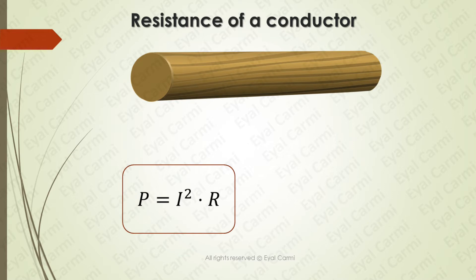First, let's talk about what affects conductor power loss. The power loss P equals I squared R, where I is the current and R is the conductor resistance. As you can see, reducing the resistance reduces the power loss.